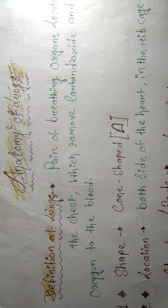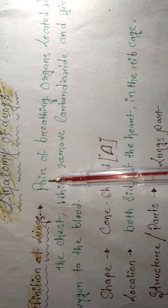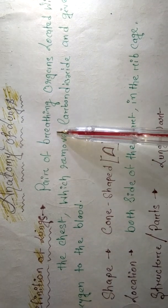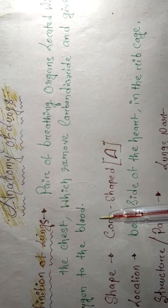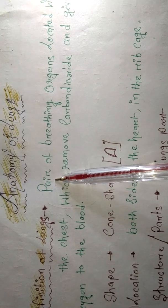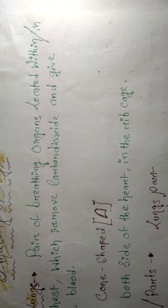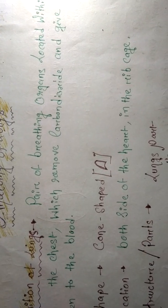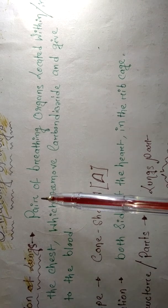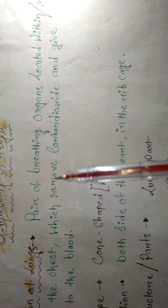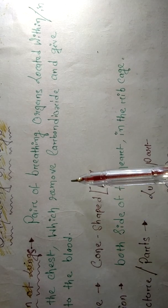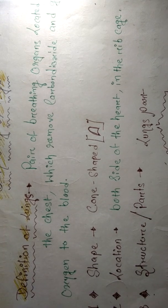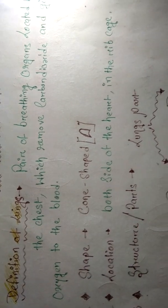Lungs are a pair of breathing organs. We have two lungs. The main function of lungs is breathing — removing carbon dioxide and taking oxygen into the blood and body. It is a pair of breathing organs located inside the chest, which removes carbon dioxide and gives oxygen to the blood.